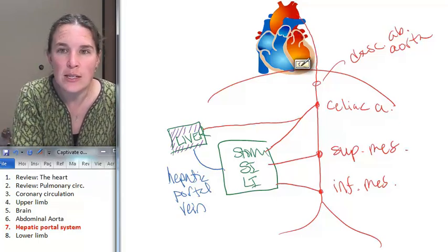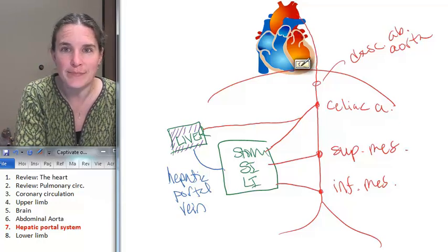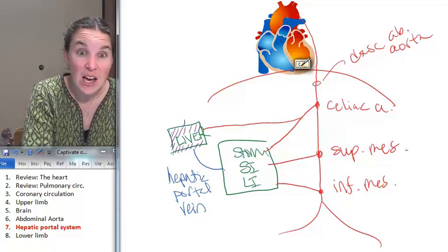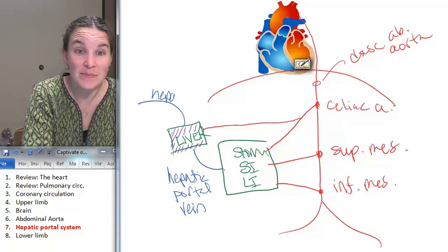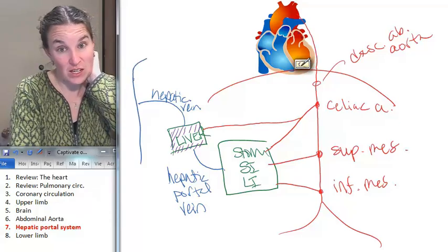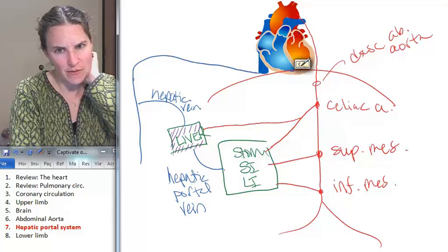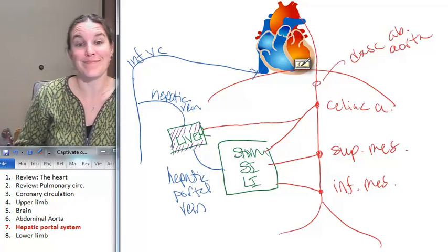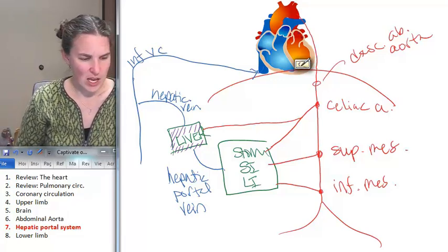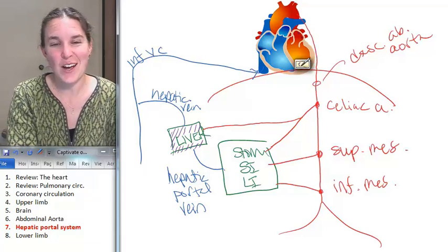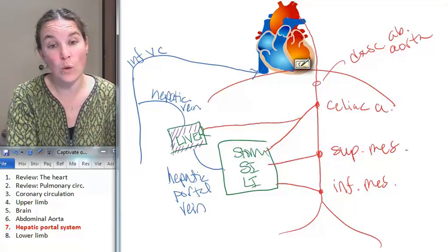Now, where is the liver going to send the blood after it's done? Who do you think it's going to send it to? It's going to send it via the hepatic vein into the inferior vena cava. Oh, how's that for a connection? This is inferior vena cava. Where's my hepatic artery? I wonder, I want this to be the hepatic artery. Do you think it is? I hope so.